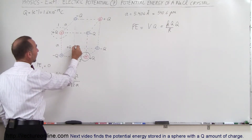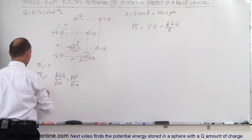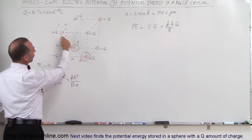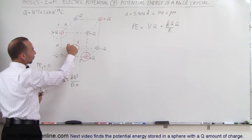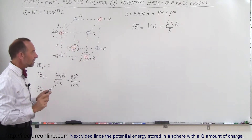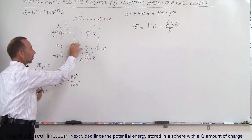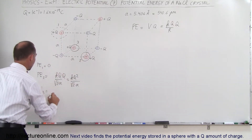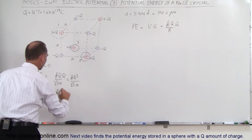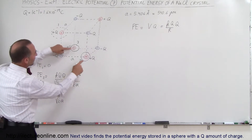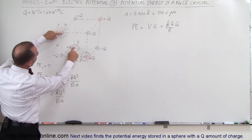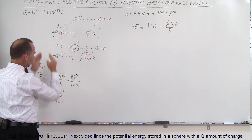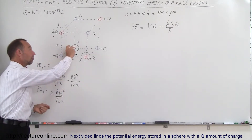Now we find the potential by placing the third charge. Potential energy 3 — notice that it is the same distance away from charge 1 as from charge 2; it's simply the diagonal across the face of the cube. So when we place the third charge, it's going to be influenced by the potential created by both the first and second charges, which means the potential energy is going to be 2 times KQ squared over the square root of 2 times A.